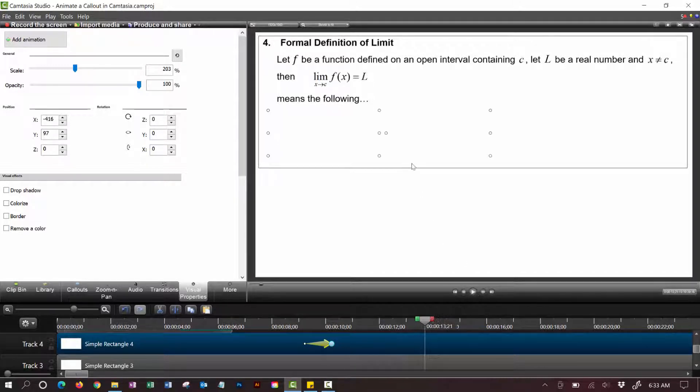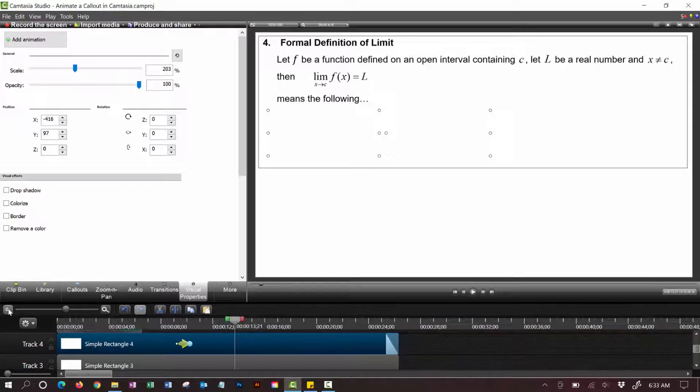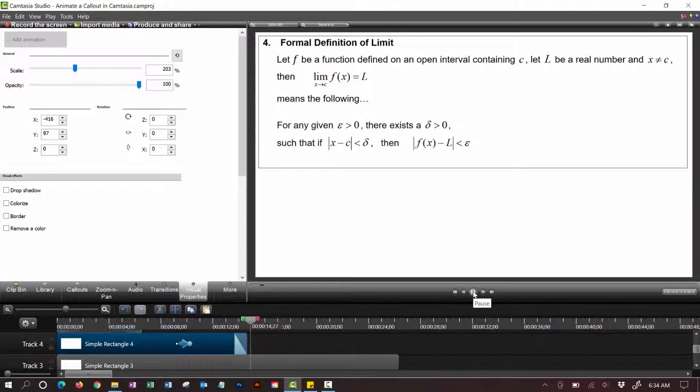And then if later I want to reveal the rest of it then once again I can just have it fade out. If I hit play then the rest of it appears.